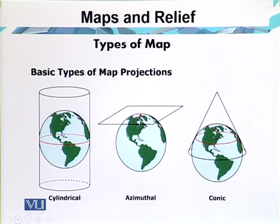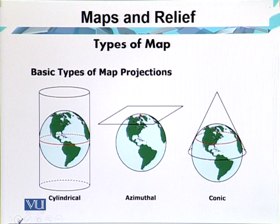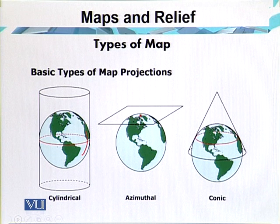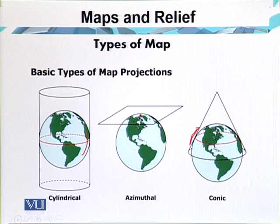Here we have the major projections used for different areas. As already discussed, cylindrical projection is used for areas closer to the equator — that line is the equator, and around this line the cylindrical projection is applied. In zenithal projection, the north and south poles are the main focus, used for areas closer to the poles. Middle latitudes are covered by conical projection, which is used for middle latitudes or temperate areas.